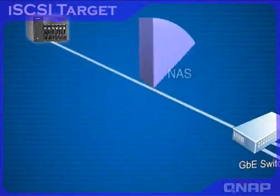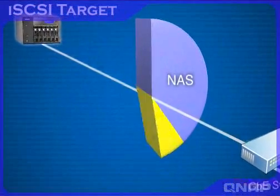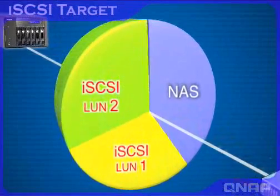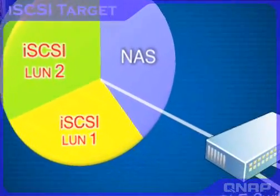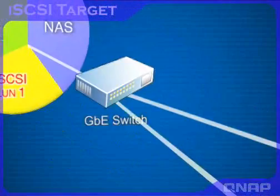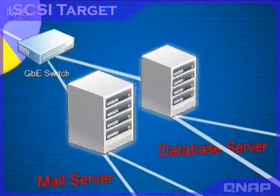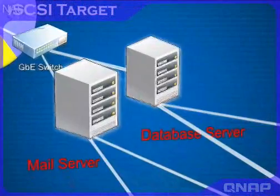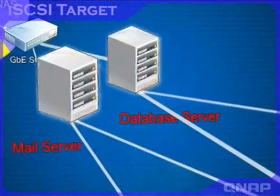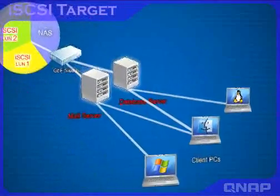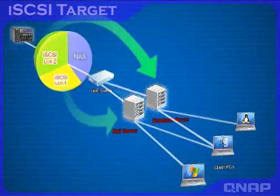The TS-639 PRO can act as both a NAS and iSCSI target server simultaneously. Different iSCSI target LUNs can be defined as storage expansion or backup destinations for existing application servers, such as database servers and mail servers. It provides a cost-efficient iSCSI solution to set up an IP SAN. Thin provisioning is supported, enabling flexible allocation of iSCSI target capacity.